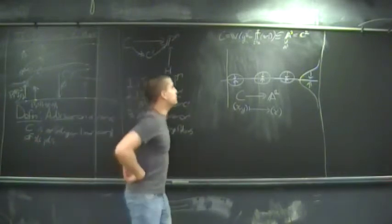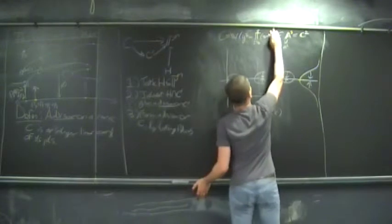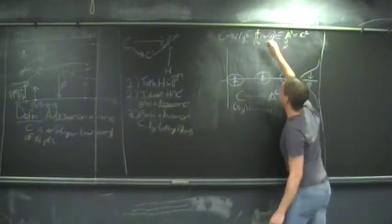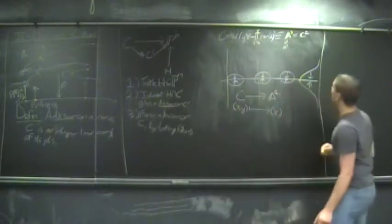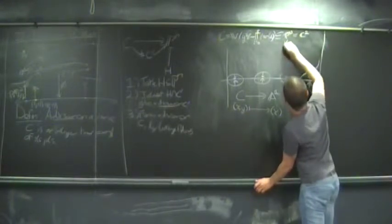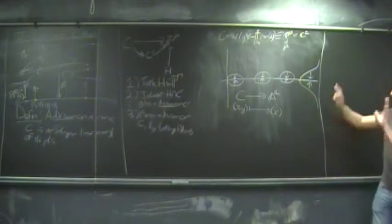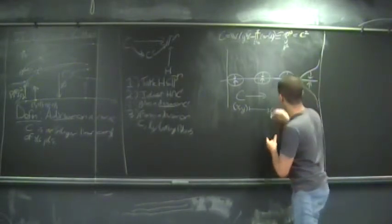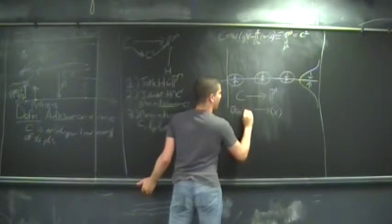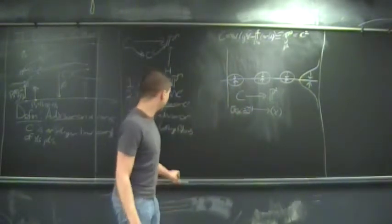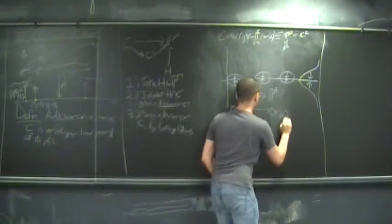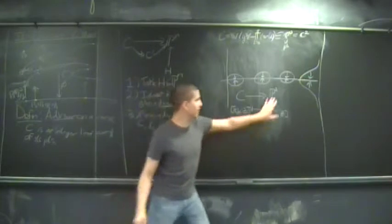Now I'll go back and put all of this stuff in projective space. I need to stick a z in there, so this becomes homogeneous of degree 9, with a z⁷ on the other side. This now lives in P². It's got a P¹ running through the middle of it. A point is now given by (x : y : z) satisfying this polynomial, and we're still just throwing out the y-coordinate to get the map to P¹.